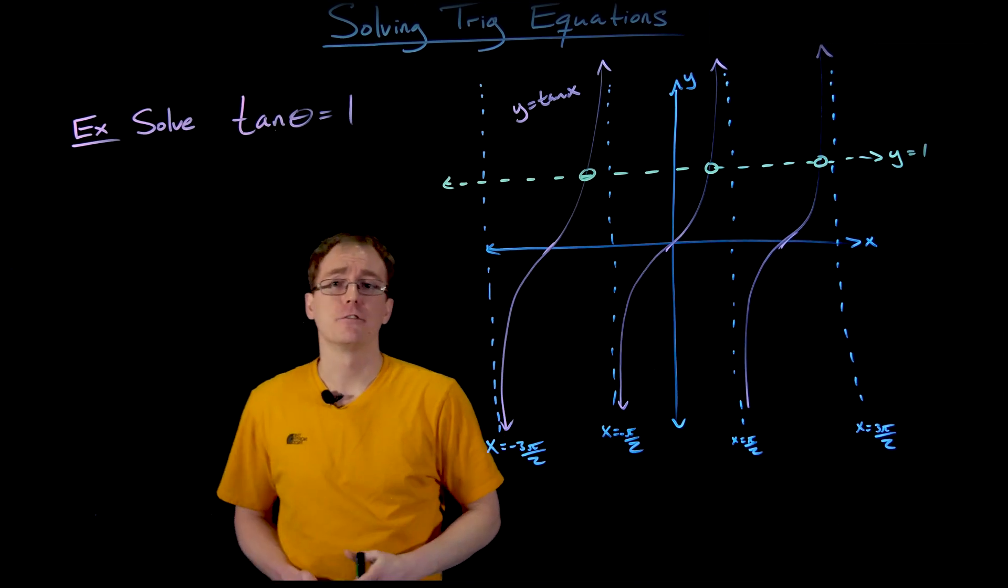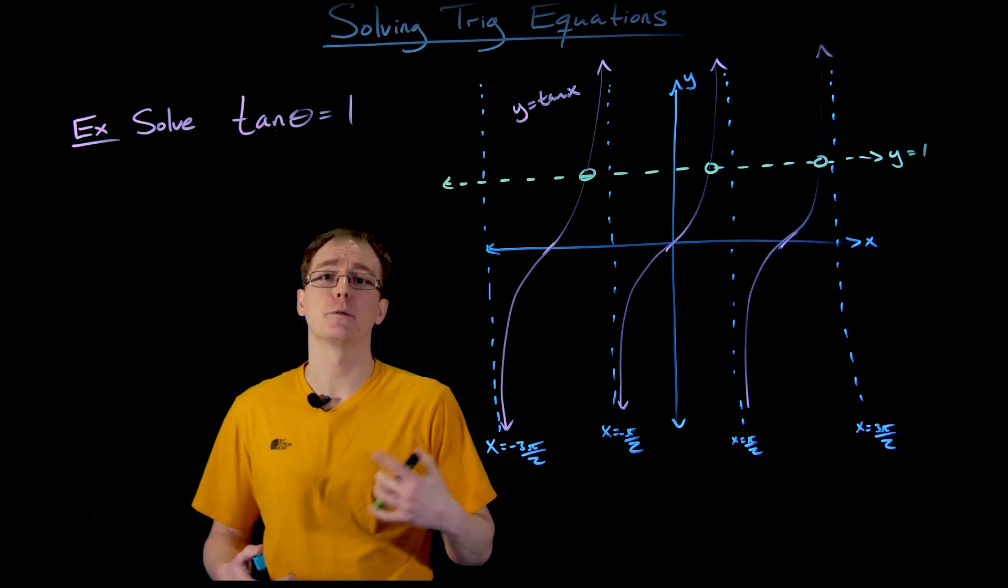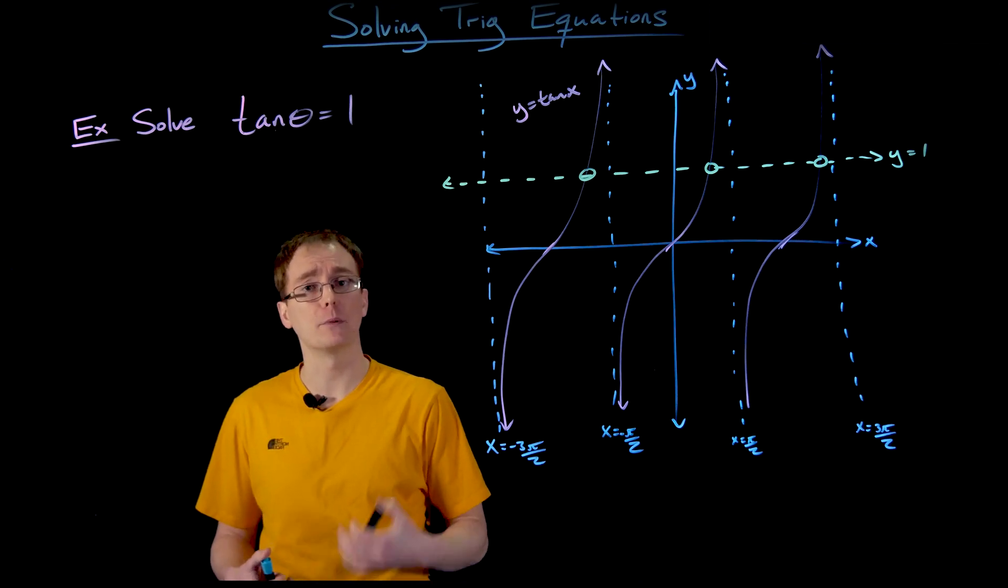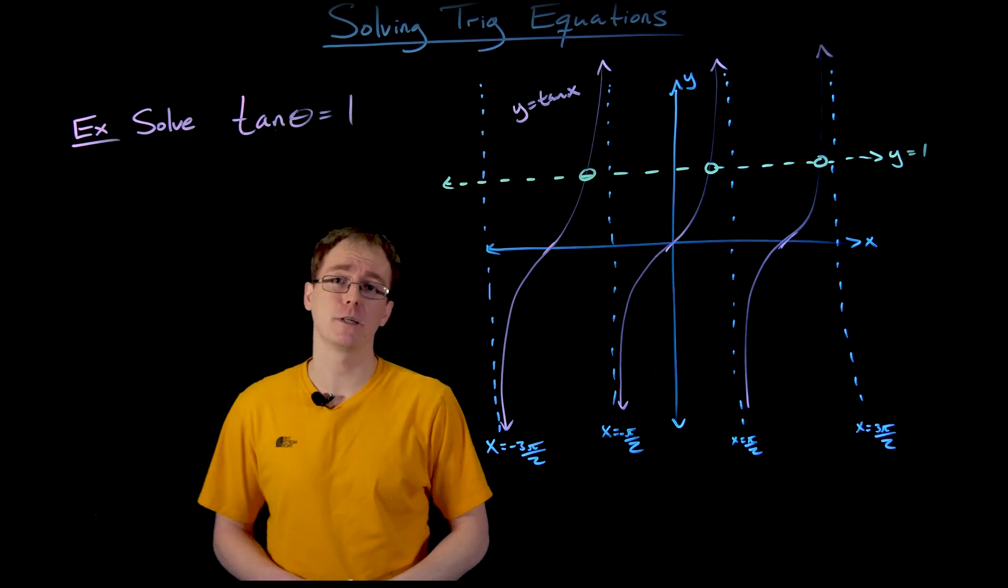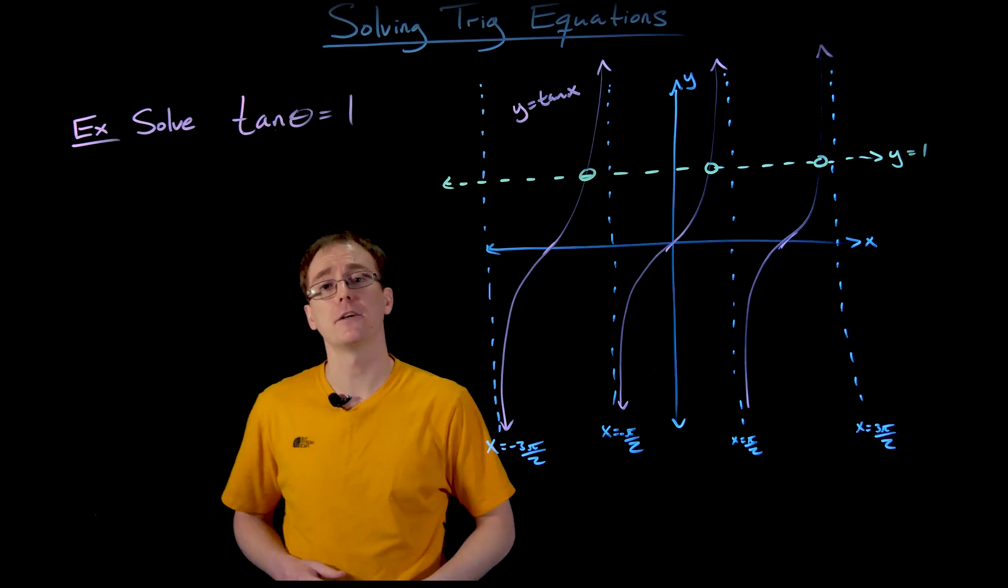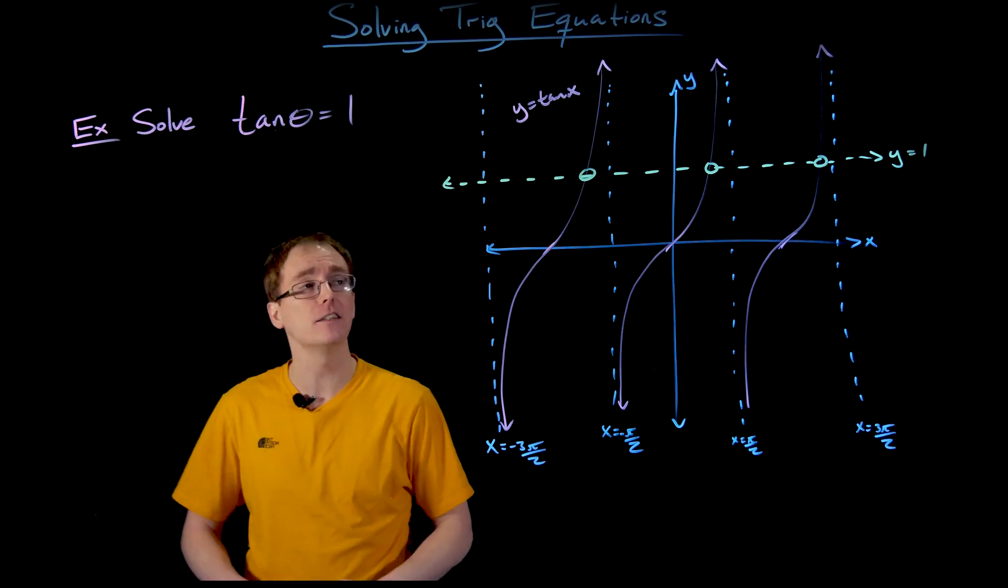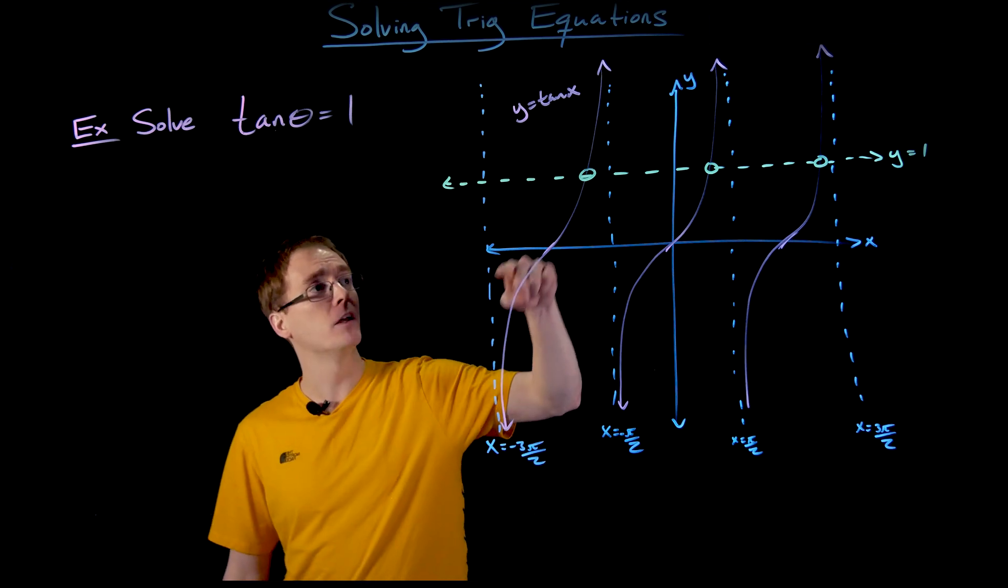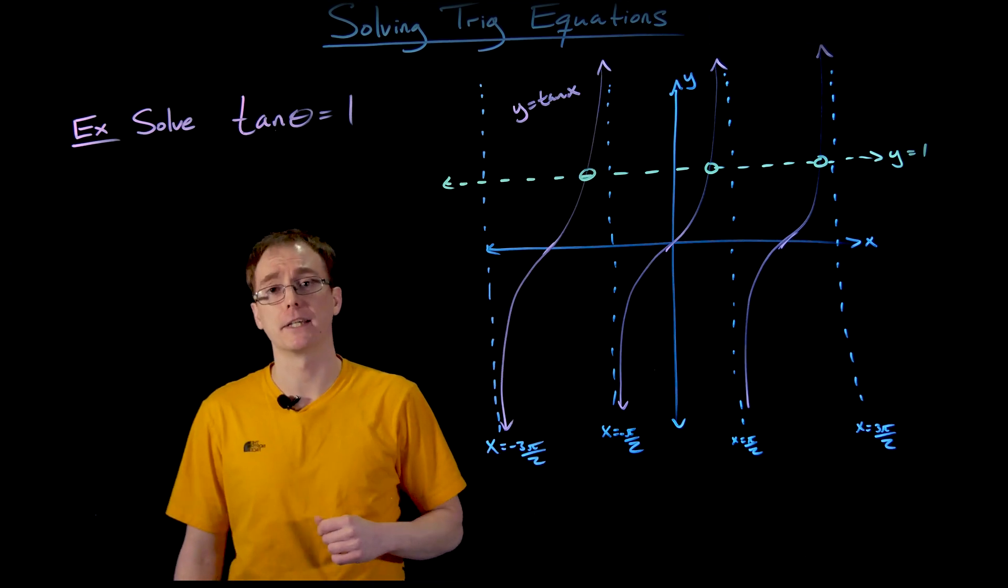Our tangent function, like sine and cosine, is periodic, so we'll have infinitely many solutions. The one big difference that makes solving tangent equations much easier is that tangent only goes through its range once per period.